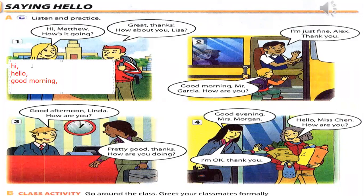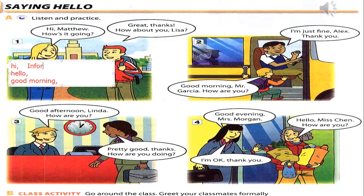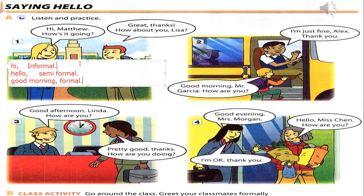Here I mentioned three words. First, 'hi' — hi indicates what? It's informal. Very good, it's informal. 'Hello' is semi-formal. 'Good morning,' 'good afternoon,' 'good evening' — this is formal. So now, where can we use informal, where can we use semi-formal, where can we use informal or semi-formal? With our friends or close relatives.